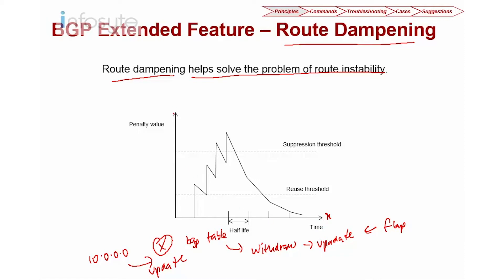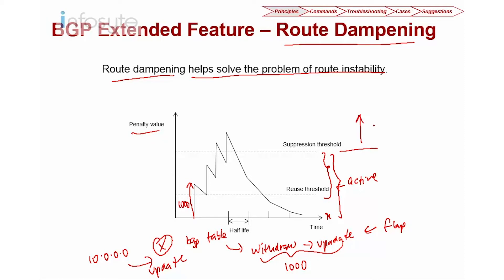Here's how it works. On the x-axis is time, and on the y-axis is the penalty value. For every withdrawal and update, we incur a penalty — the default is 1000. We define a reuse threshold and a suppressed threshold. The reuse threshold is the zone where, if your penalty is within this range, your route is active. Anything above the suppressed threshold makes the route inactive.